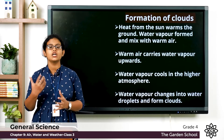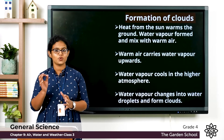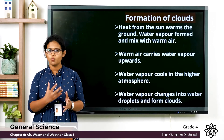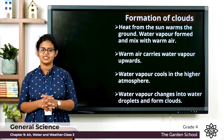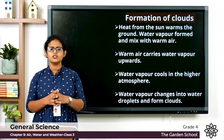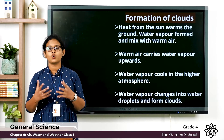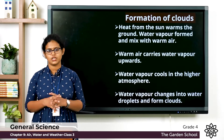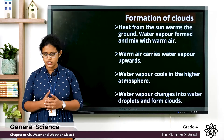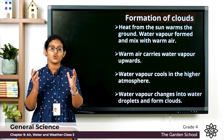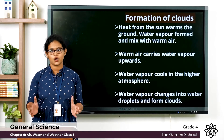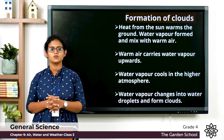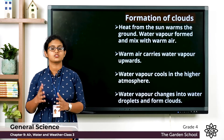Once the air reaches a certain height, the water vapor changes back into tiny water droplets. This process is called condensation — the process by which water vapor changes into water. These tiny water droplets are very light and float in the air, forming clouds.